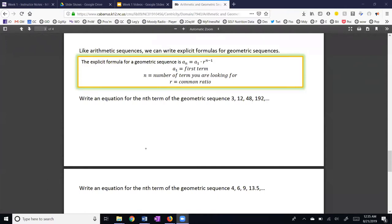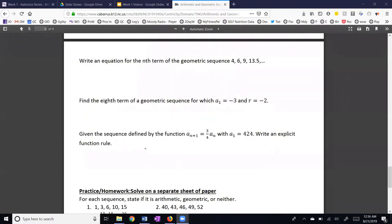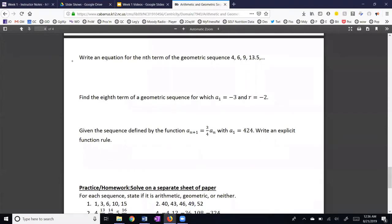See if you can write an equation for the nth term of the following geometric sequence. Let's get our raw materials. The first term is our starting point is 3. The common ratio is the ratio of any two terms. The common ratio here is 4. Then if we use our formula, an is equal to 3 times 4 to the n minus 1 power.